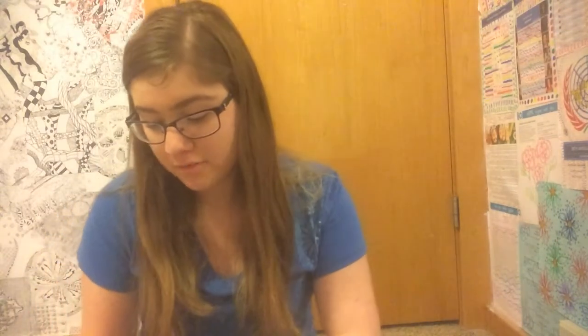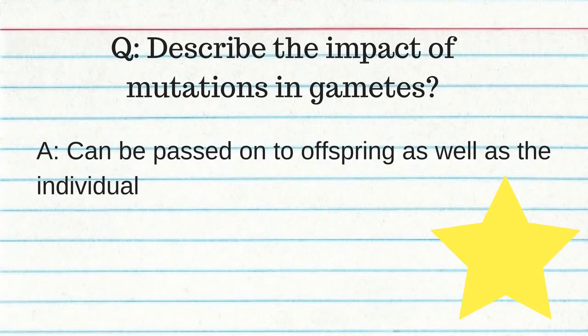A mutation in body cells (not sex cells) only damages that particular individual and cannot be passed on to offspring. A mutation in gametes can be passed on to offspring and affects yourself as well. Mutagenic agents are things that can cause mutations. A genome is all the genes in a particular species.